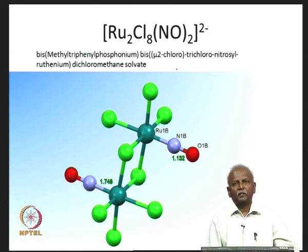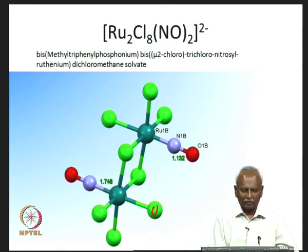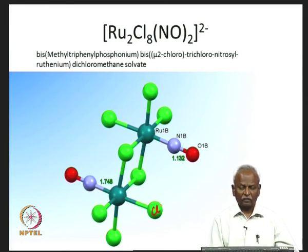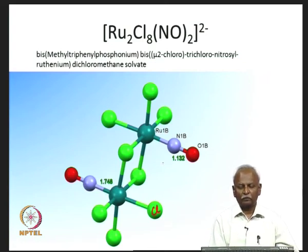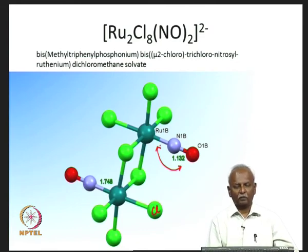Nitric oxide is a ligand encountered in coordination chemistry also extensively. Here is a simple coordination compound of ruthenium which has got chlorine atoms and nitric oxide coordinated to the ruthenium centre. The behaviour of the ruthenium-nitric oxide bond is very similar — you do have pi-type interactions between the ruthenium and the nitric oxide.